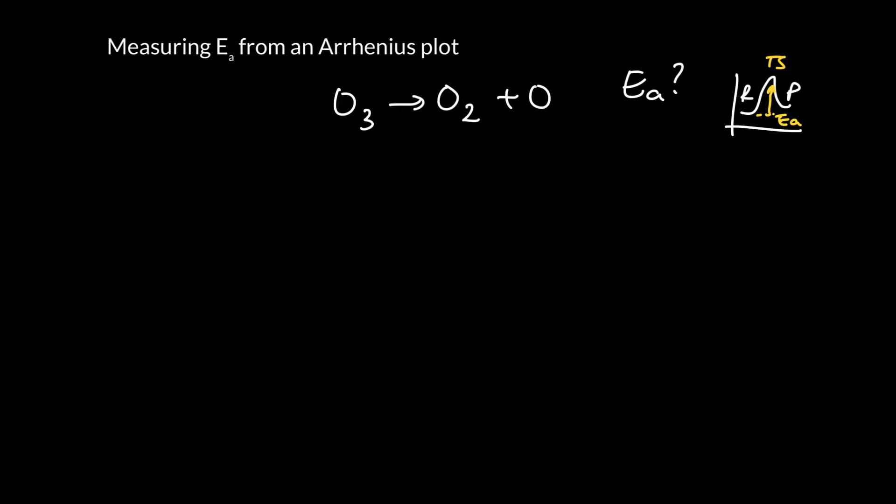Now you might say, well, who cares about ozone? Ozone is one of those neat molecules that protects us from ultraviolet light. So it actually absorbs ultraviolet light and prevents nearly so much from coming down and striking us on the Earth, and giving us things like skin cancer.